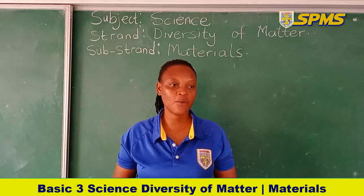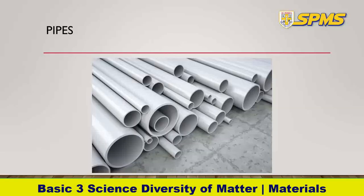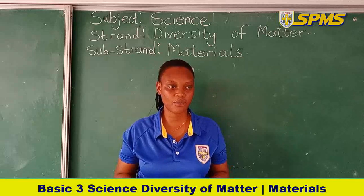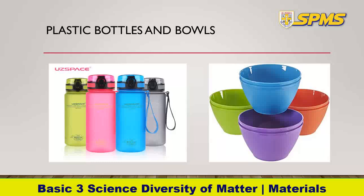Our next example is the pipe. Pipes are made of plastics because they are waterproof and do not rust — these are the properties that make the material strong. We also have plastic bottles and bowls, which are common around us. They are all made from plastics.